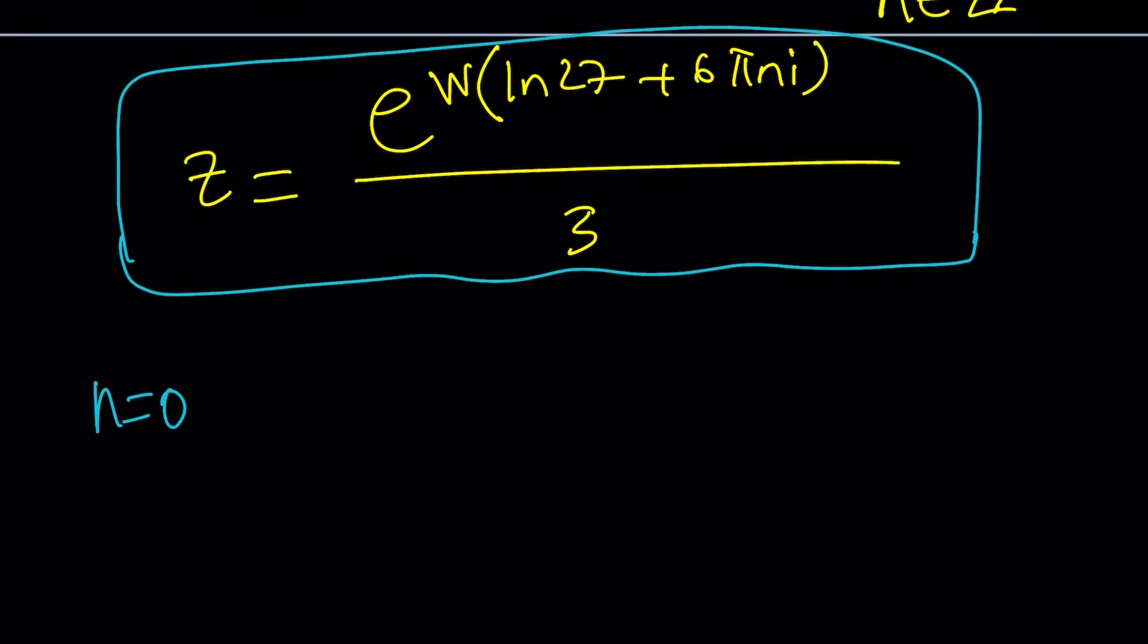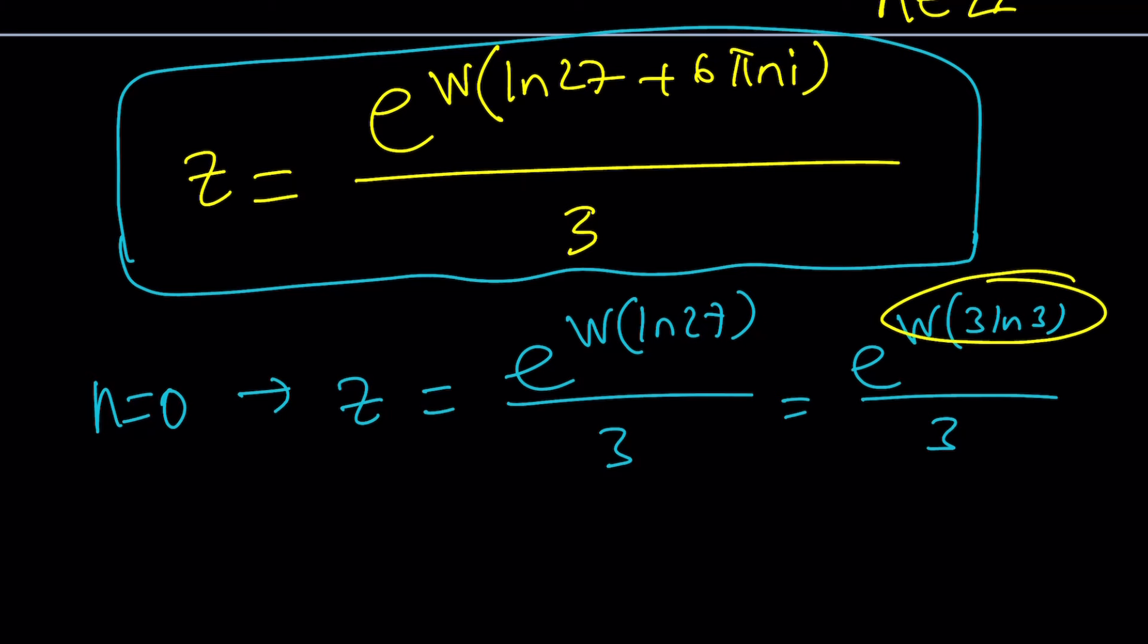Now, if n is equal to 0, let's go ahead and look at some special cases. You're going to get z equals e to the power w ln 27 divided by 3. As you know, ln 27 is 3 ln 3. So, this can be written as e to the power w 3 ln 3. From here, you should be getting ln 3. This should give you ln 3. E to the power ln 3 is 3. 3 divided by 3 is equal to 1. So, from here, z equals 1. For n equals 0, you get the real solution. Awesome.